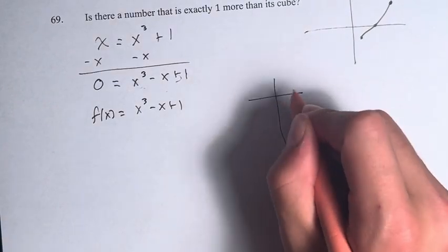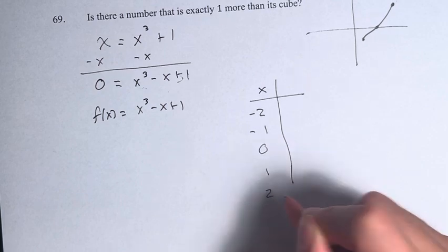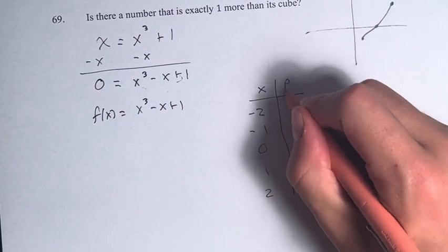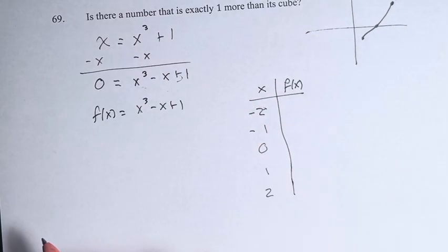So if we take values of x, it's usually good to take values of x that are close to zero, and we just have to plug them in for f of x. Just plugging in the values of x wherever we see an x in the equation.